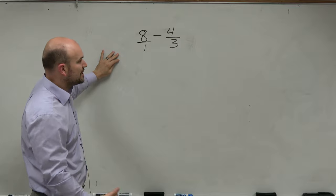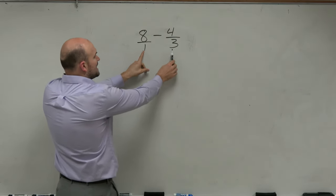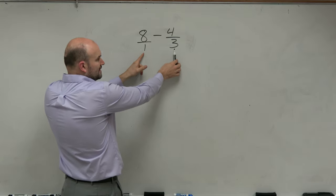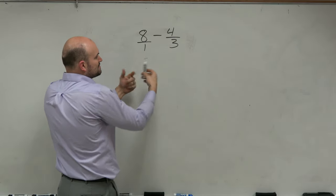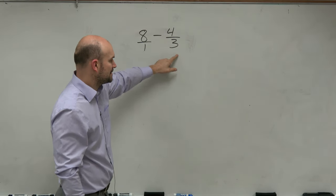Now, the important thing is when we are applying addition or subtraction is we need to have a common denominator. And right now, our denominators are not the same. This is a 1, and that's a 3. So what we need to do is obtain the smallest multiple of 1 and 3, which we'll call our common denominator.